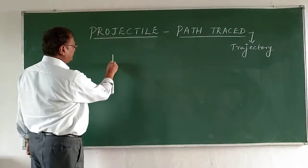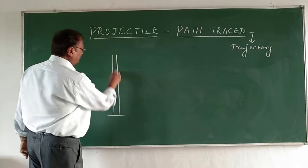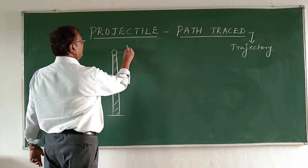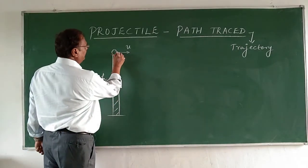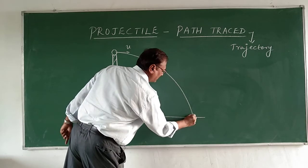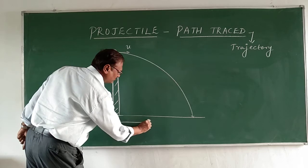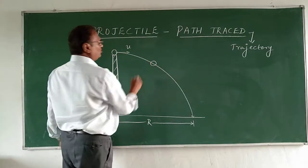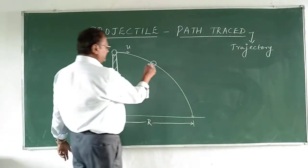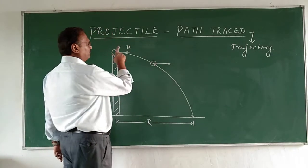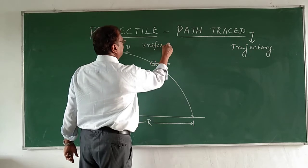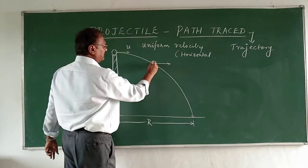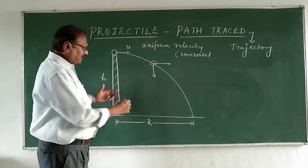Before we go into that, let me revise what we studied in the last video. We took a tower of height h, shot a ball from there with an initial velocity u, and the body traveled and fell at the floor at some point. The horizontal distance traveled is called the range of the projectile. A projectile is a body under the influence of two forces: one is the horizontal force giving it uniform velocity, which does not change.